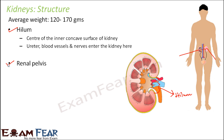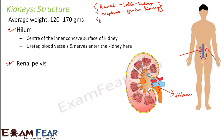The next part is the renal pelvis. Two important terms related to kidney are 'renal', a Latin word meaning kidney, and 'nephro', a Greek word meaning kidney. You will come across terms like renal pelvis, renal columns, nephrologist, and nephron. Renal pelvis is the next part of the kidney.